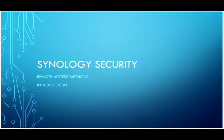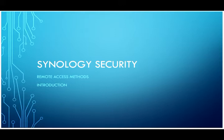I've made a list with a security level for each method. The higher the number, the easier it is to configure; the higher the security level number, the higher the security; and the higher the risk number, the higher the risk. We've got the QuickConnect Relay, which is very easy to configure but has a low security level because all your data transits through a third-party Synology relay server, so the risk is high.